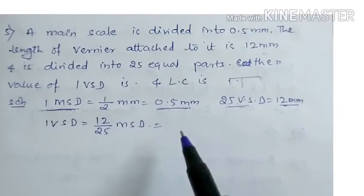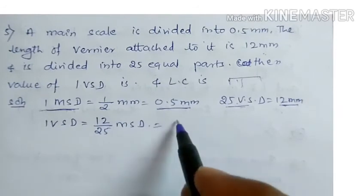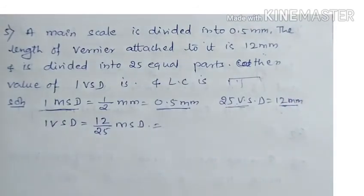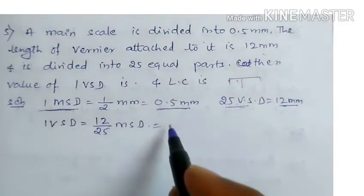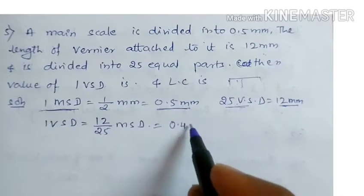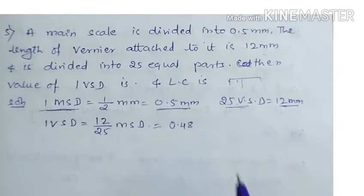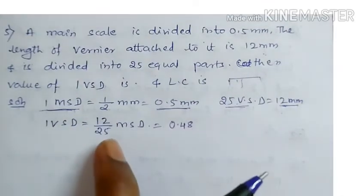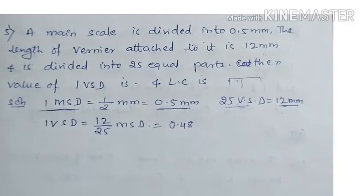25 VSD, so 1 VSD is equal to 12 divided by 25. So 12 divided by 25 MSD. How we are doing it? That is 12 divided by 25 is 0.48. You can multiply it by 4 here; it will become 100. Directly, you will get the answer.